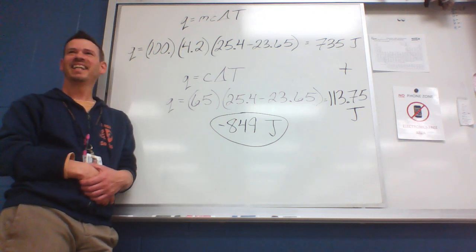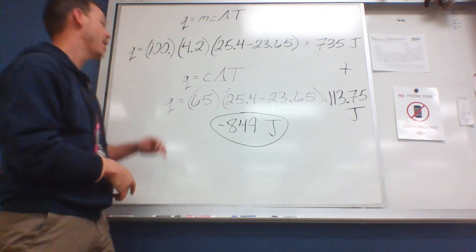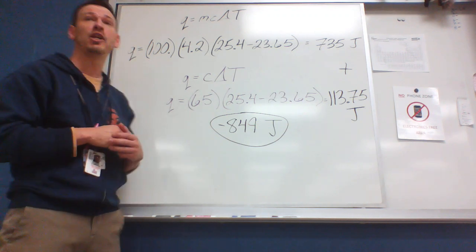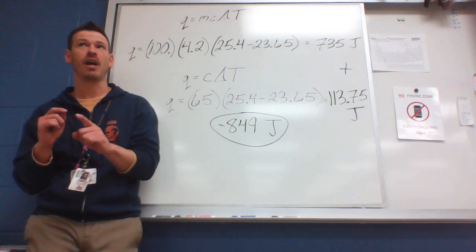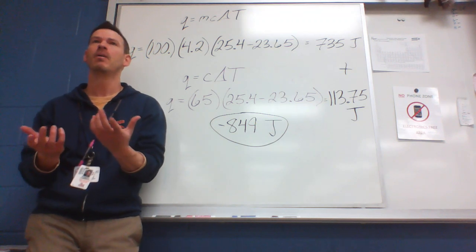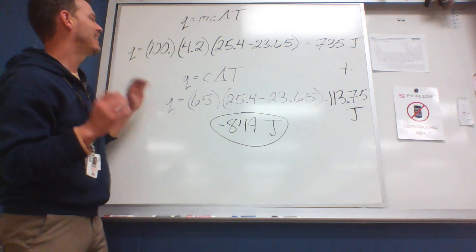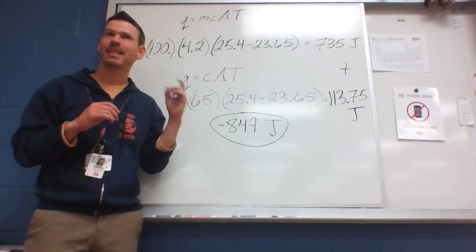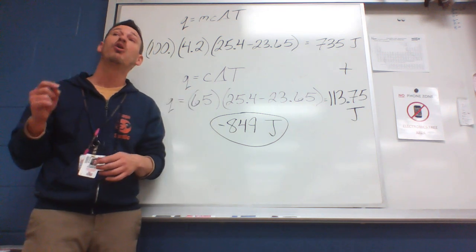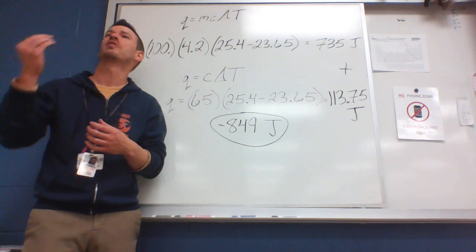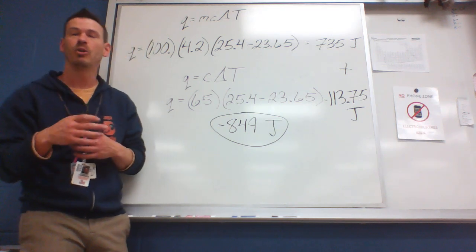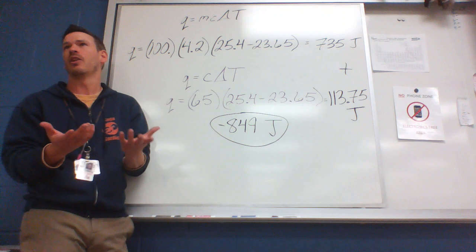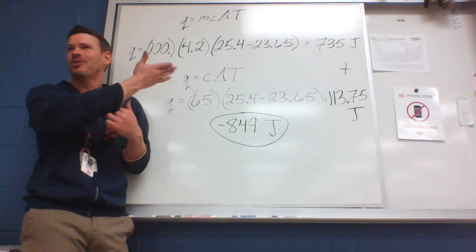To summarize the extra equation: Q equals capital C times delta T is not given on the AP reference sheet, so you need to know it. All it does is remove the mass term because we don't care about the mass of the thermometer — just its heat capacity. You only use this equation if the problem gives you the specific heat of the measuring device — that's your signal that extra numbers are there for a reason.